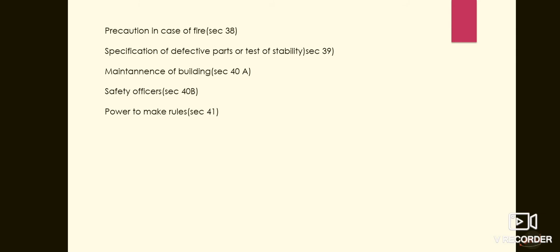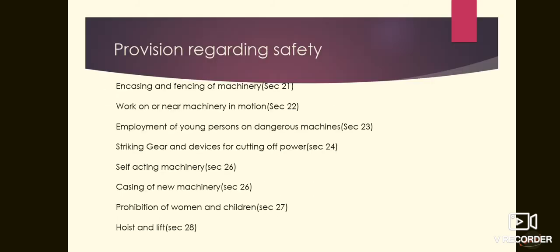Moving on to session 41: power to make rules. The state government may make rules requiring the provision in any factory or class of factory of such further devices and measures for securing the safety of persons employed therein as it deems necessary. These are the provisions discussed under safety.